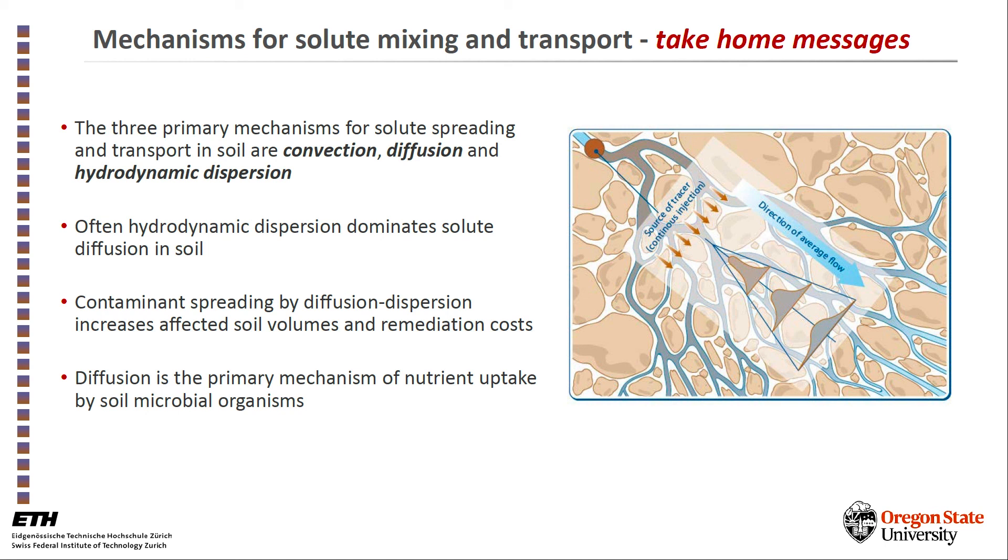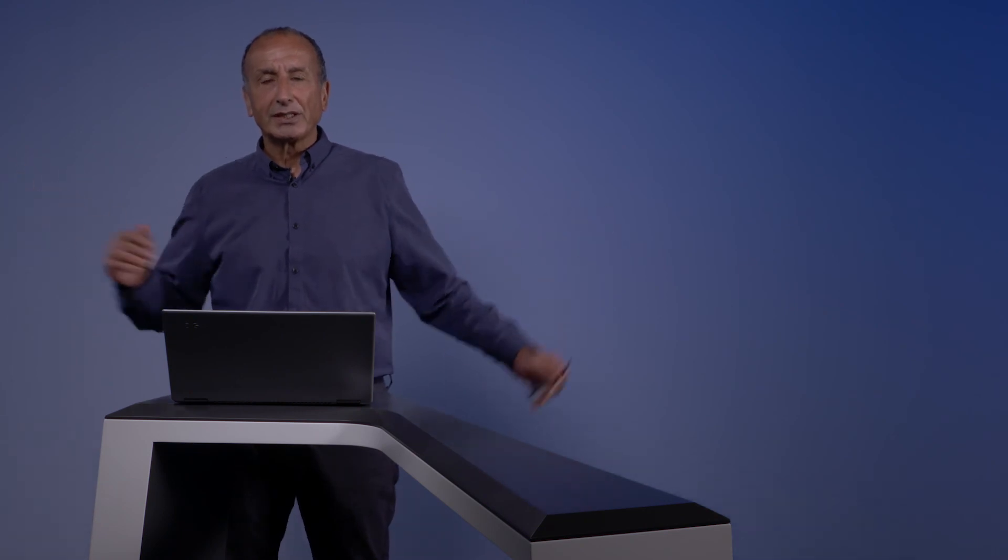Contaminant spreading by diffusion-dispersion increases the volumes of soil that may be affected by a contaminant and therefore increases the costs of remediation because you have to treat a much larger volume. However, we should not forget the diffusion because it is the primary transport mechanism for nutrient supply to bacteria and to other microorganisms in the soil.